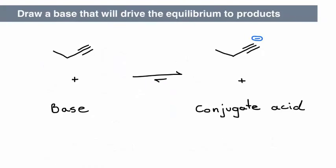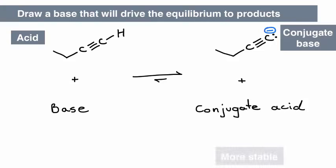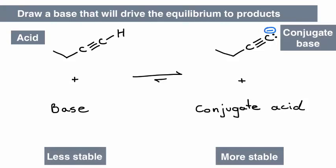Next, we will again use method 1 and method 2 to identify or draw a base that would drive the equilibrium to the product side. To accomplish this, the products must be more stable than the starting materials.